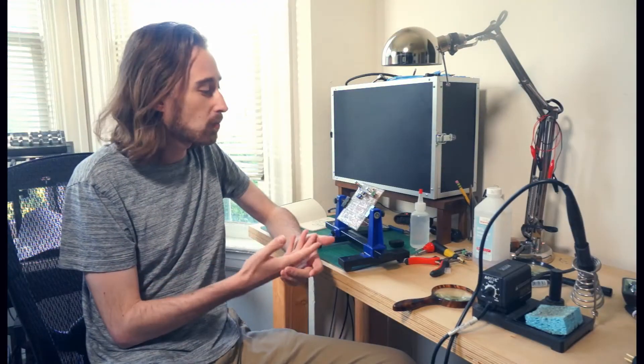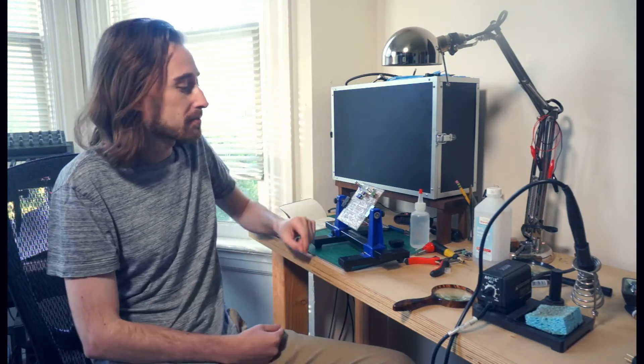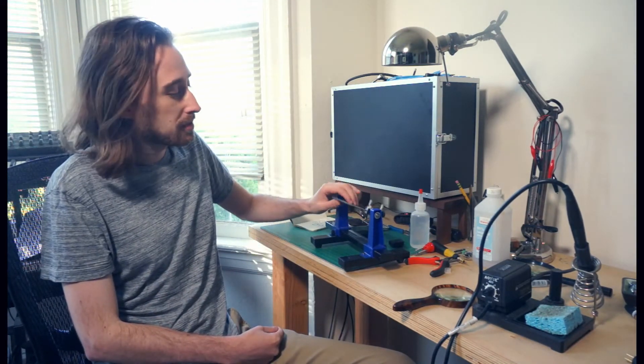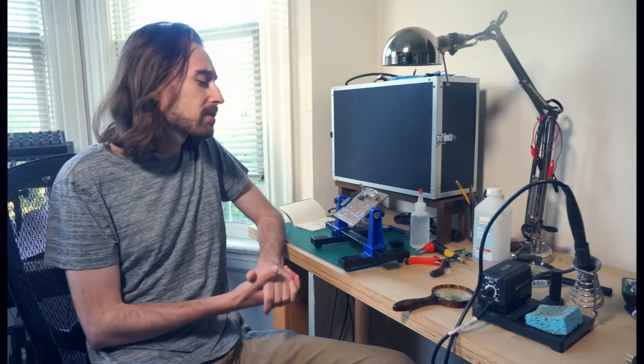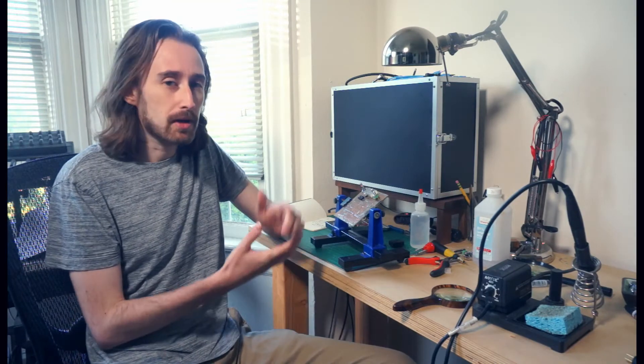Soldering parts to a PCB is ordinarily a pretty straightforward affair. You start from the bottom up with the smallest parts, put them in place, flip the board over, and solder them. However, since this is a prototype board, and I'm not supremely confident in all of the connections, we're going to take things slow and test them as we go.